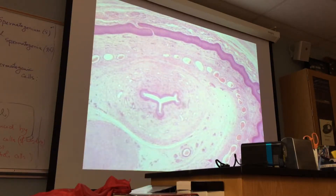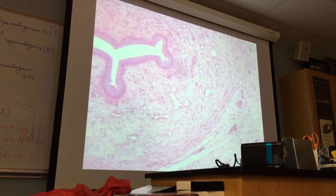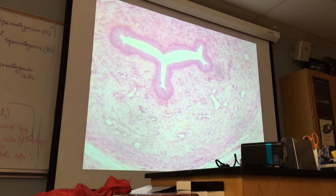The epithelium lining the urethra is a stratified epithelium. It could be stratified columnar and also cuboidal. At some places it will be columnar and cuboidal both — a combination of both cuboidal and columnar cells in several layers.